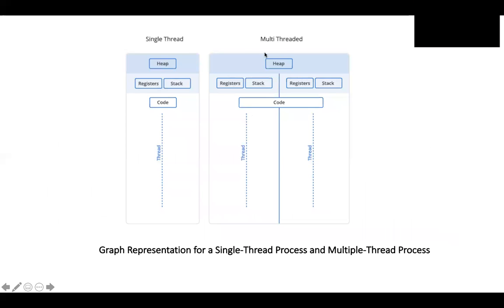Here's a diagram that illustrates the idea of a single-threaded process and a multi-threaded process. On the left-hand side, we have a process that is single-threaded — you can see those elements are supporting the thread. And on the right-hand side, we have a multi-threaded process. You can see the registers and stacks that are owned individually by each thread.